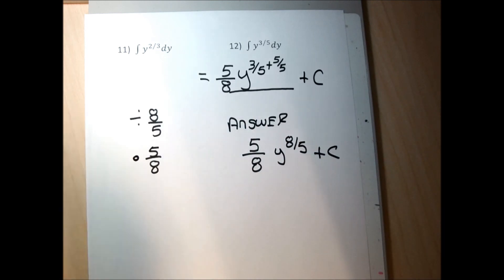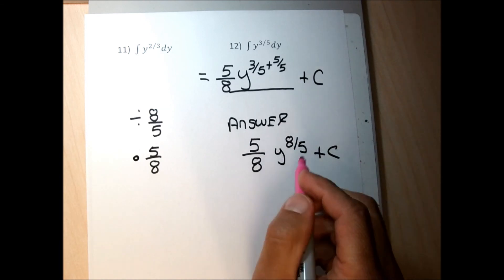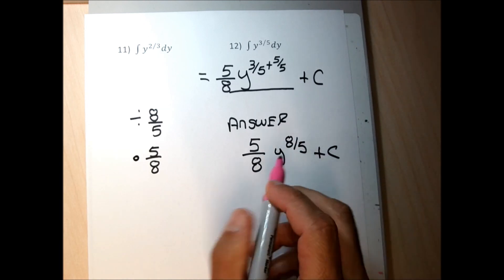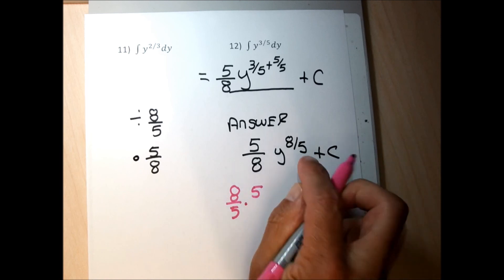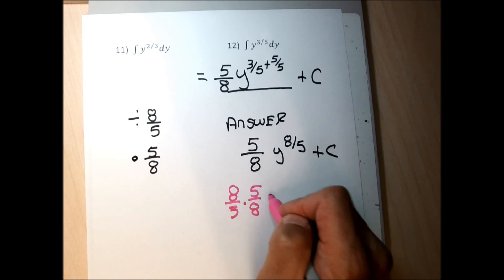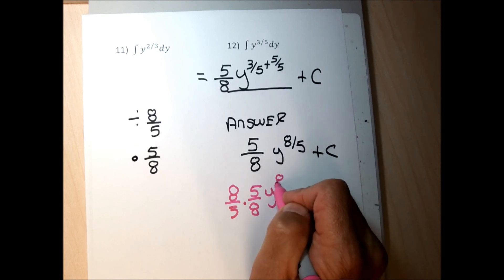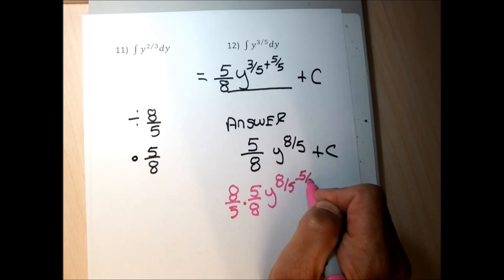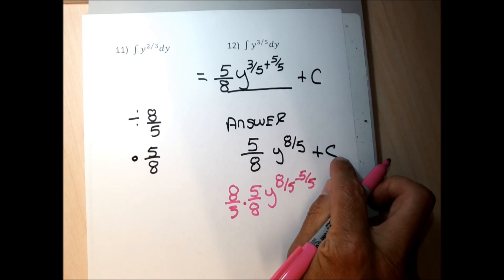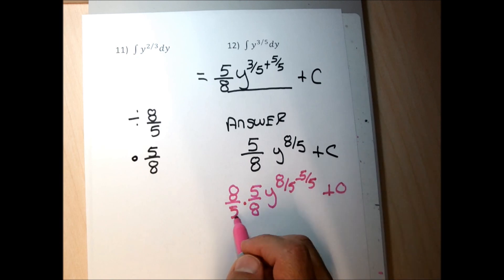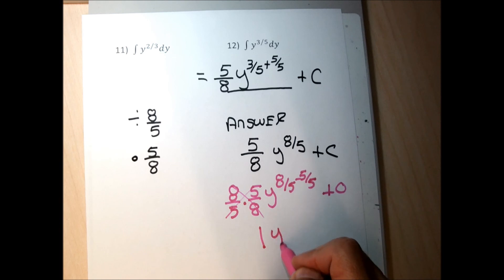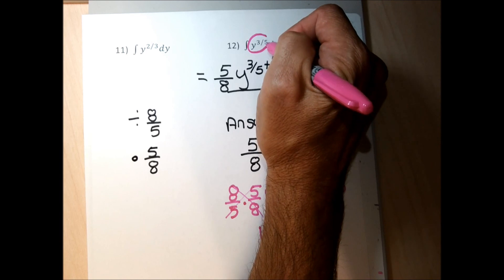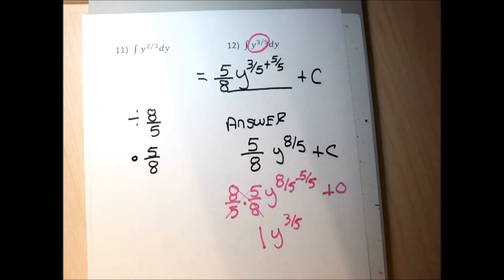Checking problem 12: I take the exponent 8/5 times the coefficient 5/8 — these are reciprocals and multiply to 1. The exponent becomes 8/5 minus 5/5, which is 3/5. So the derivative is y to the 3/5, which is exactly what was between the integral symbol and the dy.